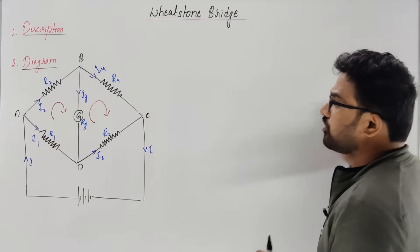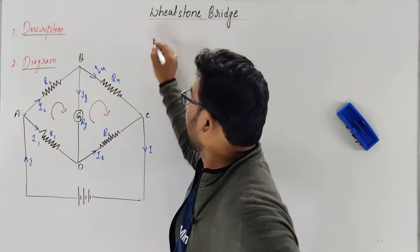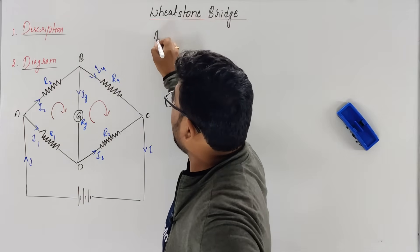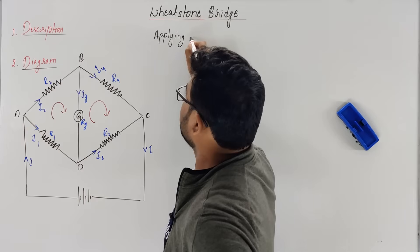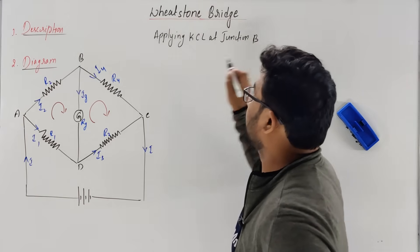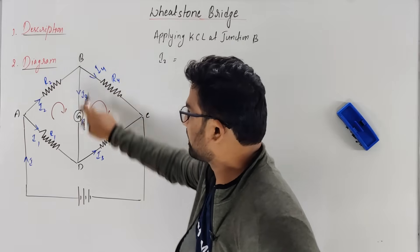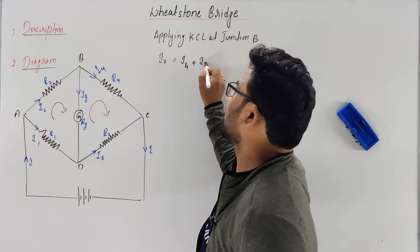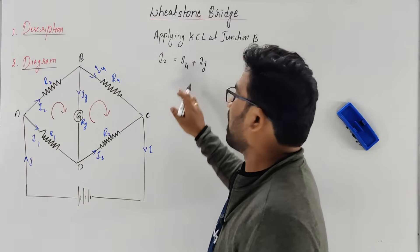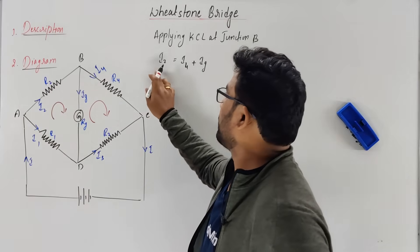Let's come to the derivation now. You have to apply Kirchhoff's rules — KCL and KVL. Applying KCL at junction B: current I2 is coming in, I4 is going out, and IG is going out. So I2 must be equal to I4 + IG. This is because incoming current must equal outgoing current — that's KCL.